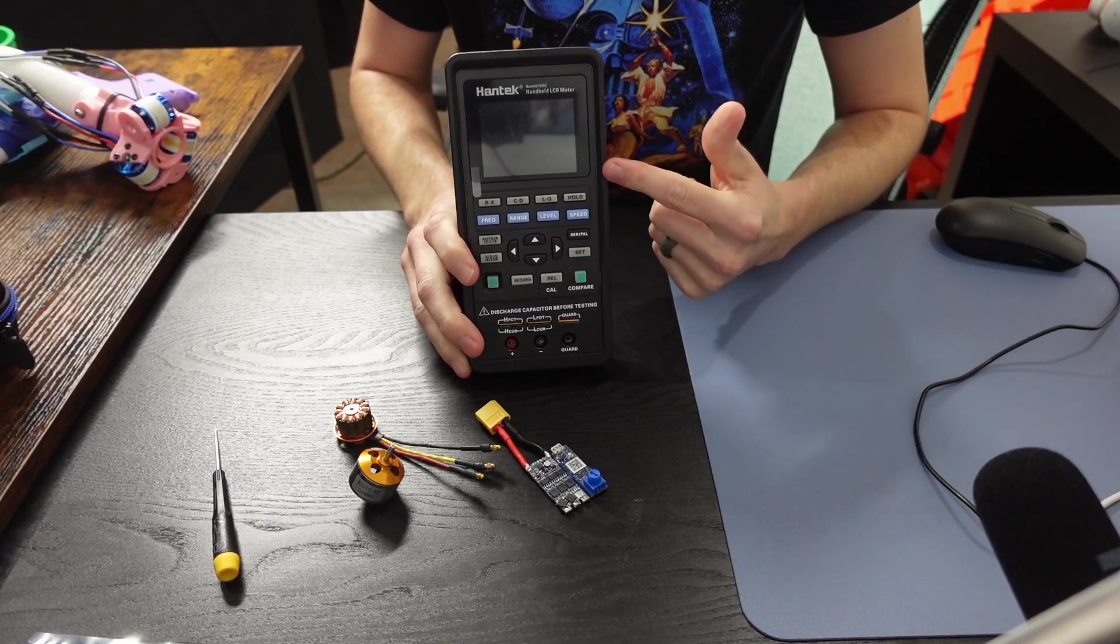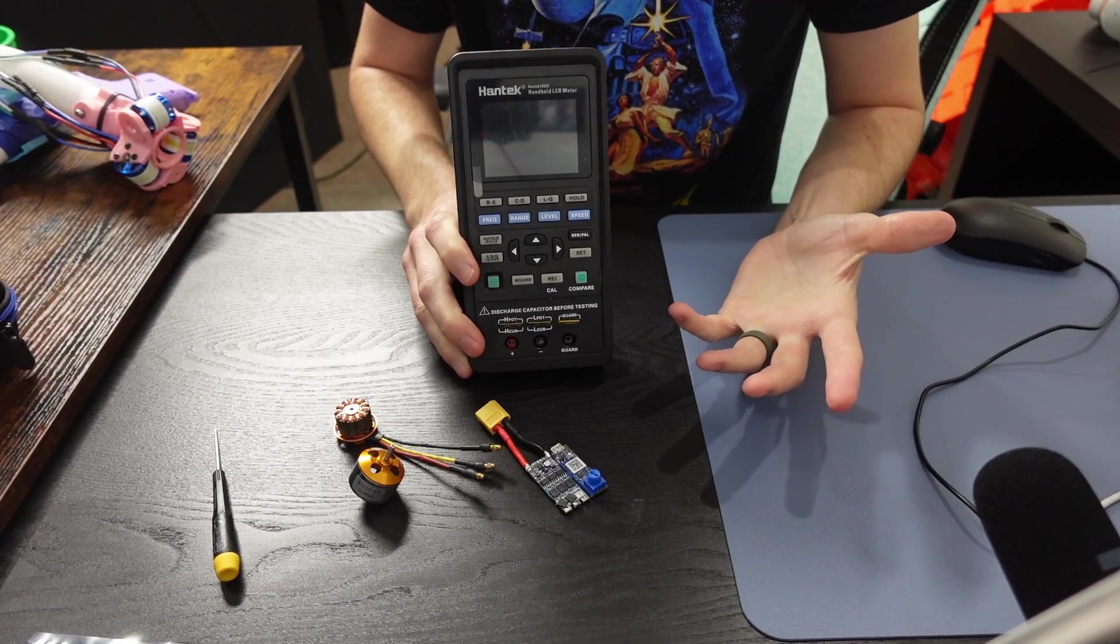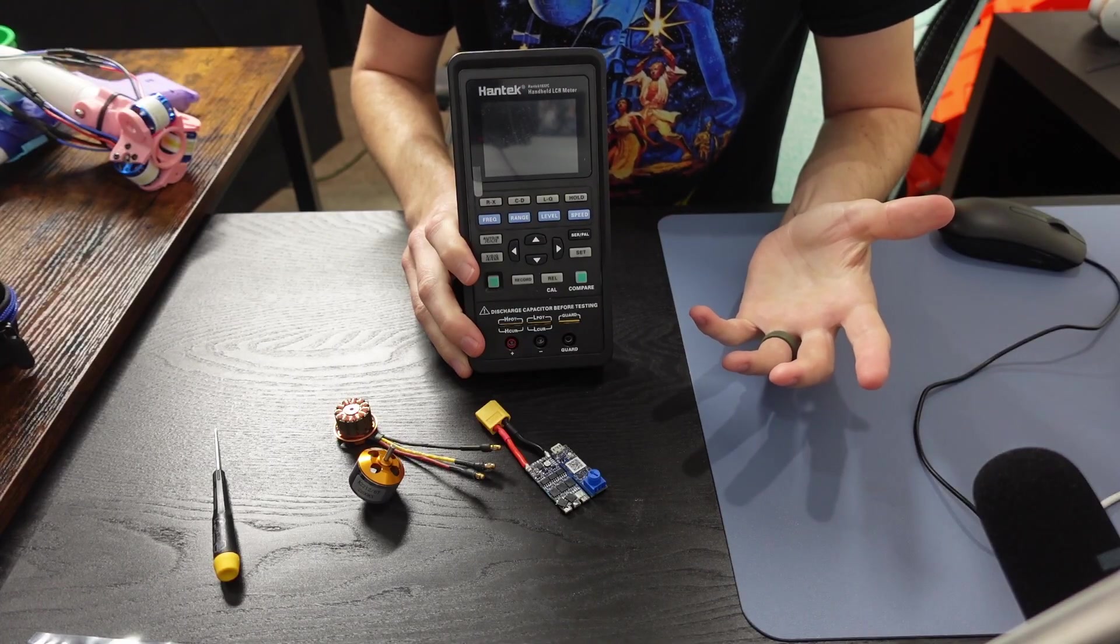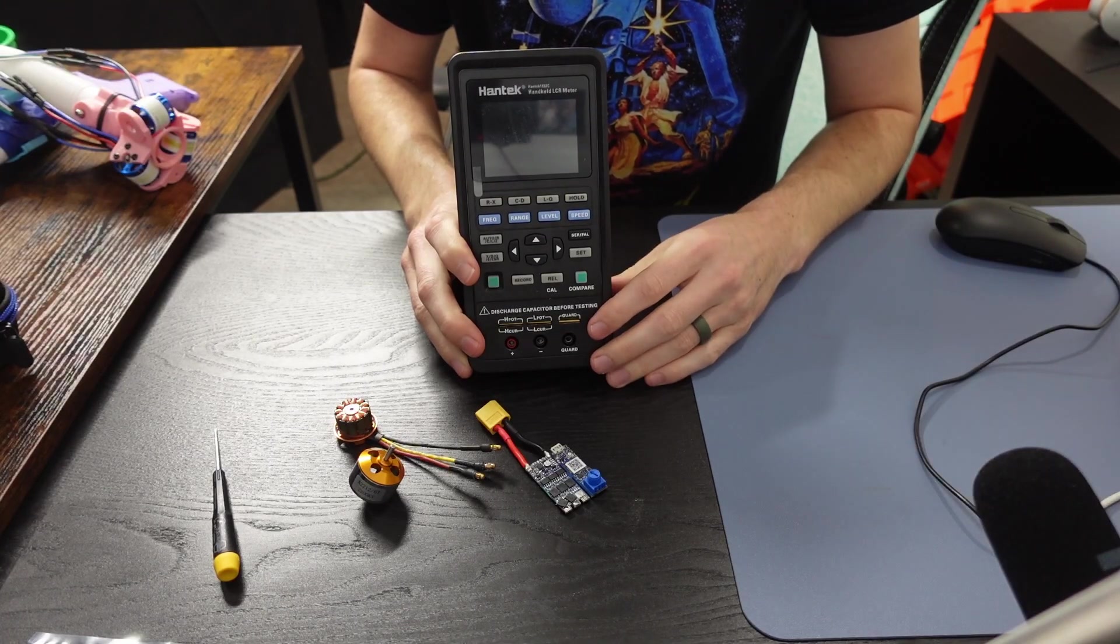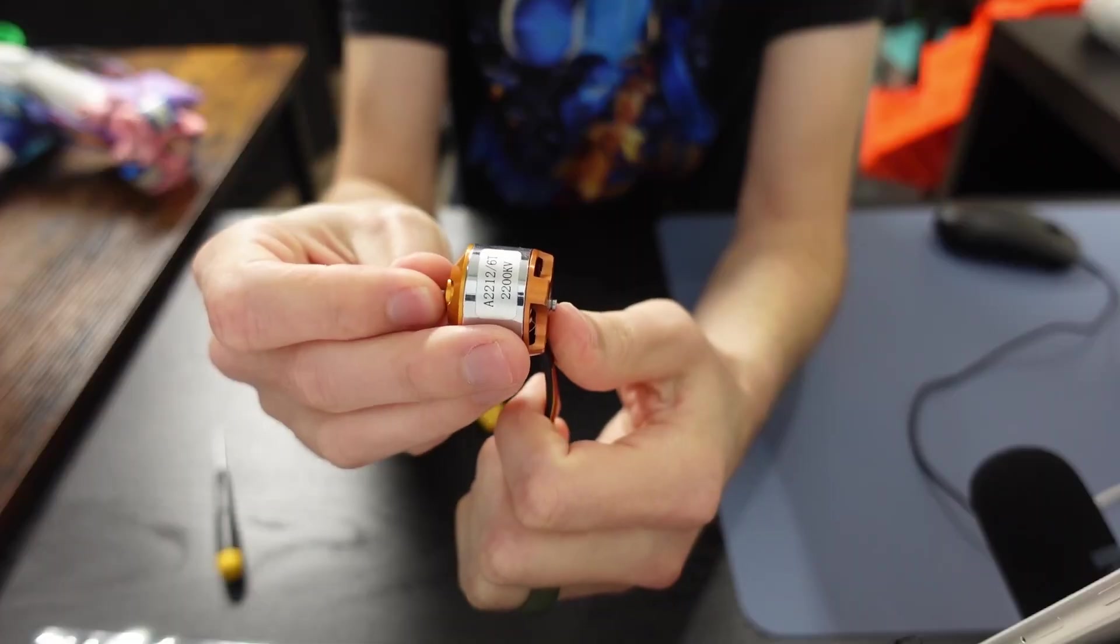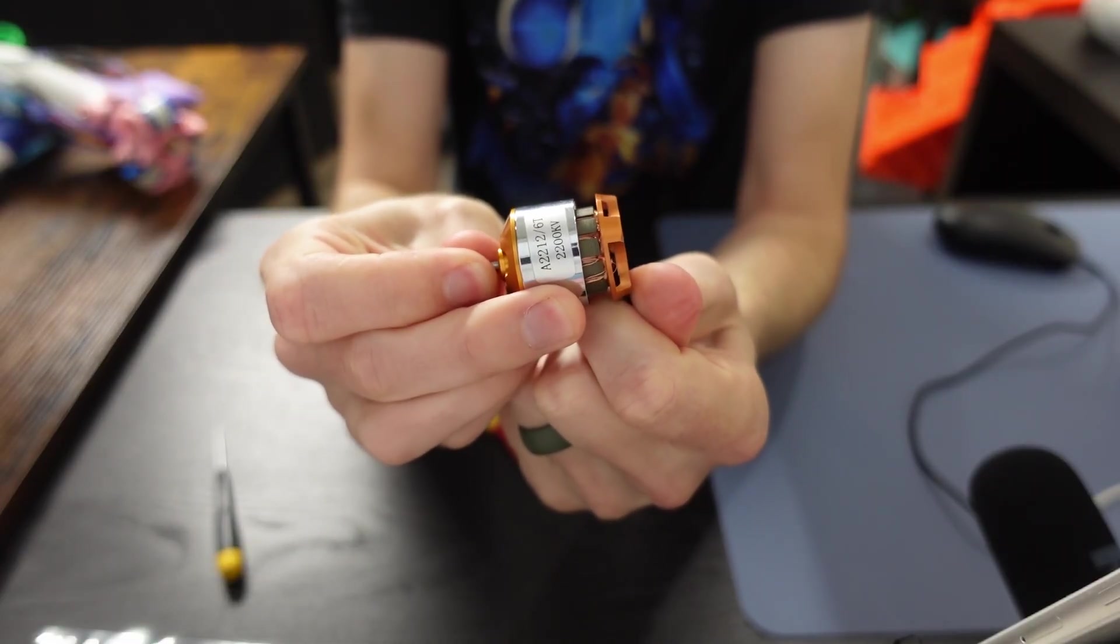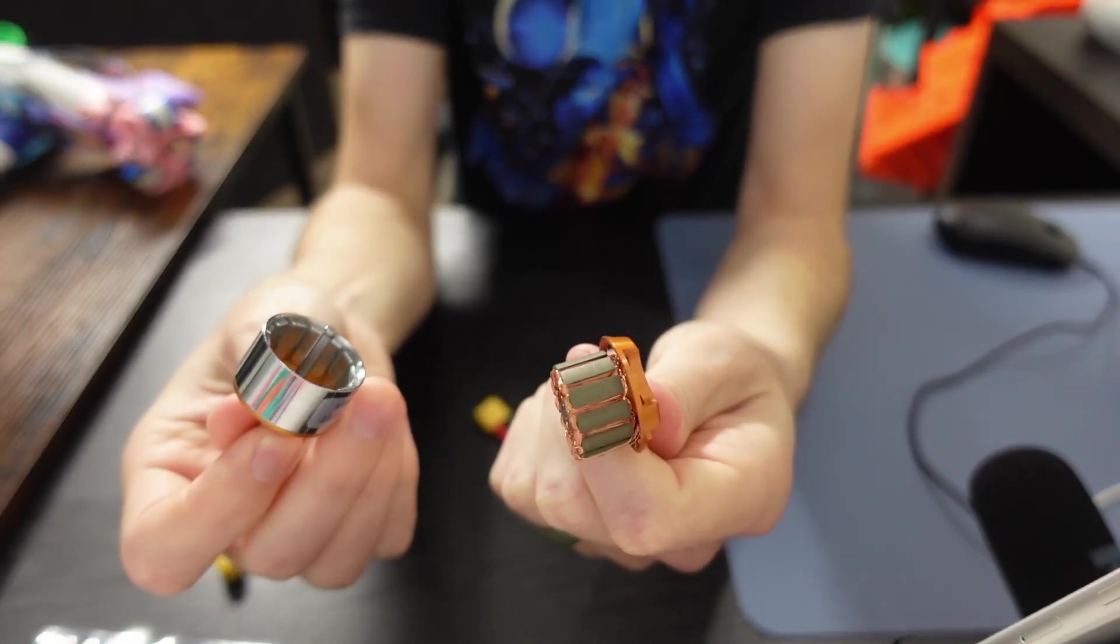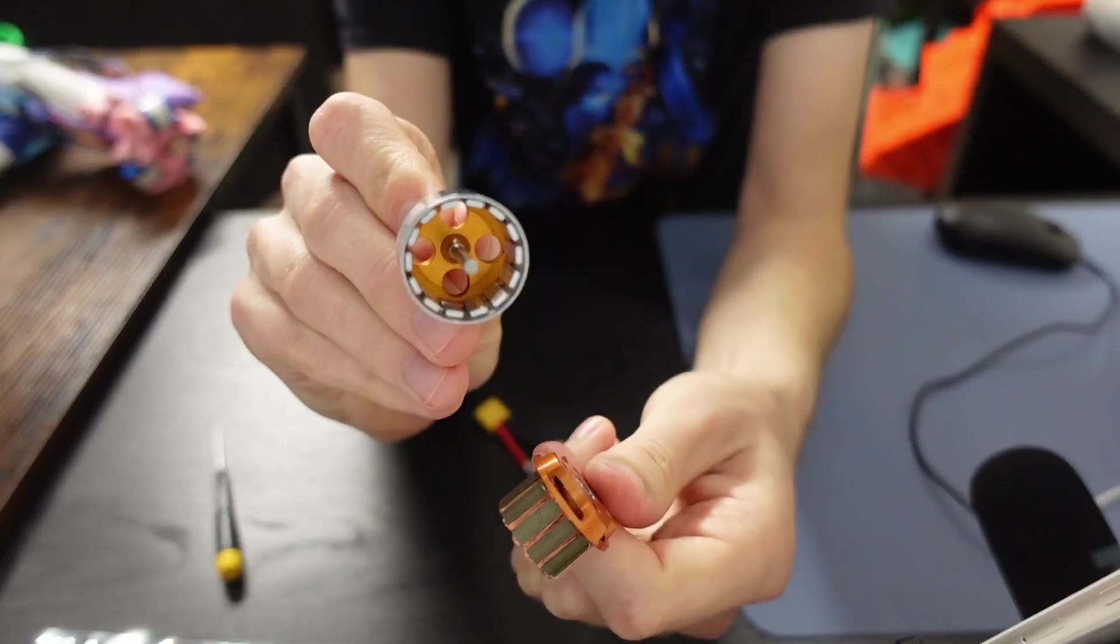Likewise, for inductance, you need to grab an LCR, set it to measure inductance at 40 kHz, and multiply your measured value by 1.5. When you're measuring your inductance, don't forget to remove your rotor, because the magnets will affect your measurement.